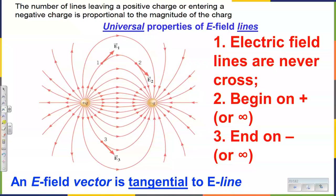When electric field is strong, we can see more lines per centimeter. And theoretically some line might go infinitely far to infinity, but normally they begin on a positive charge and end on a negative charge. If we know how to draw several electric field vectors, we can always connect and draw a line. If we have a line, we can always draw a vector anywhere we like.